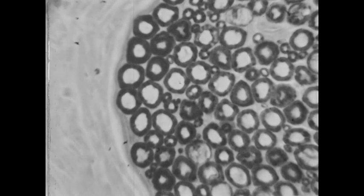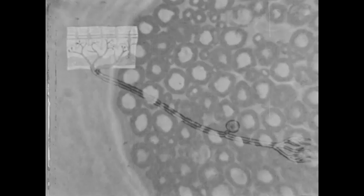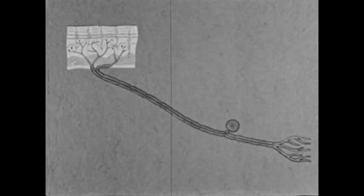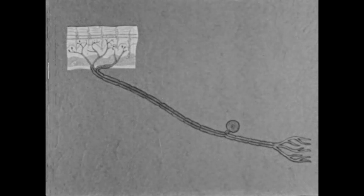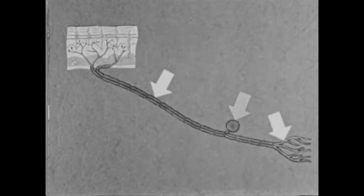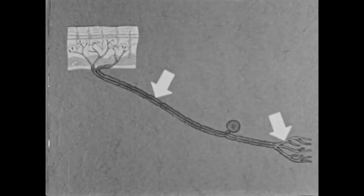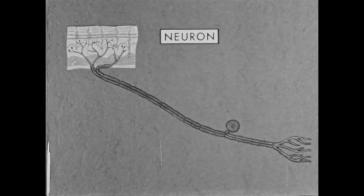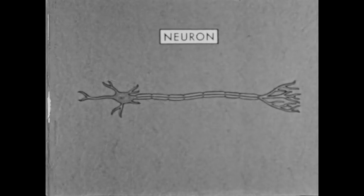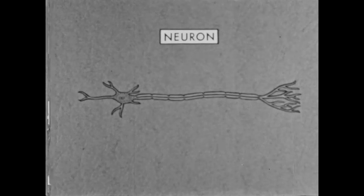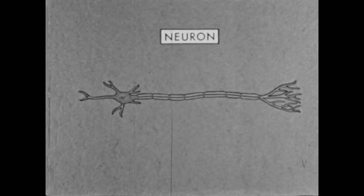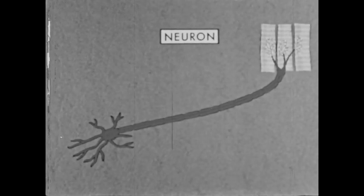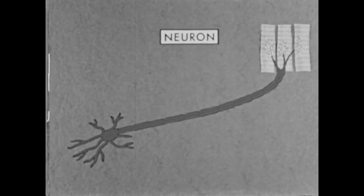Each of these fibers is attached to a specialized nerve cell, drawn here highly magnified. A nerve cell with attached fibers is called a neuron. There are three kinds of neurons in the human nervous system. These neurons look different, since each kind of neuron has a specialized function.